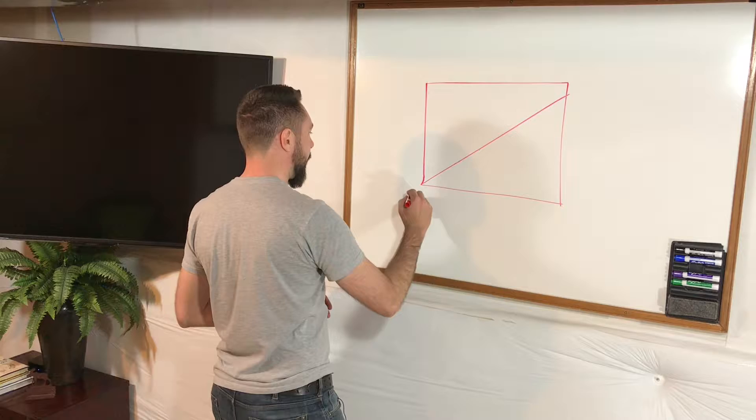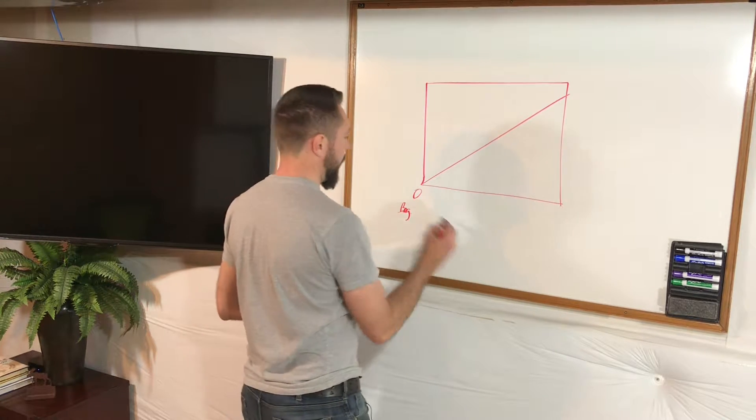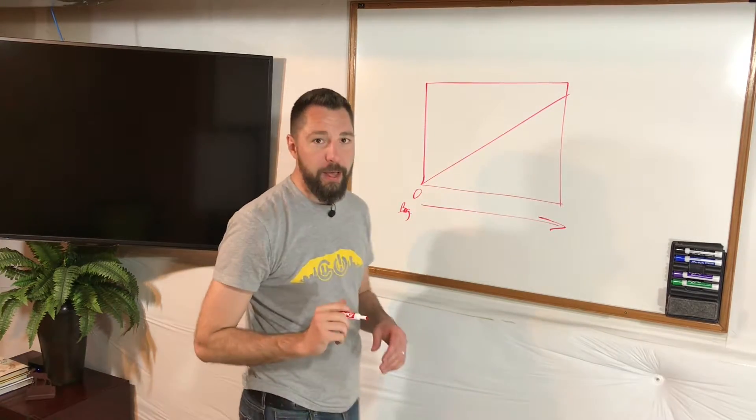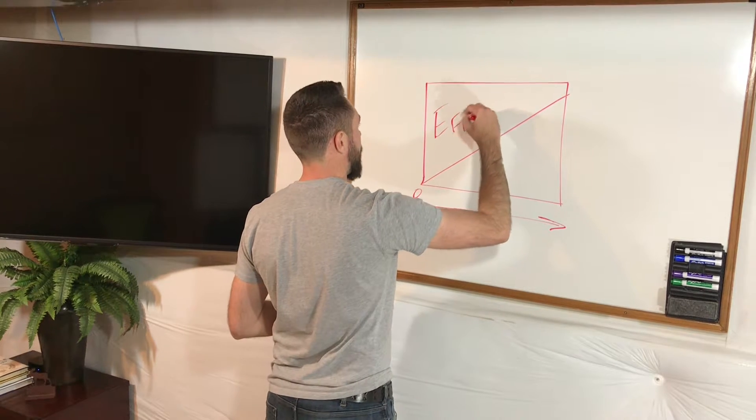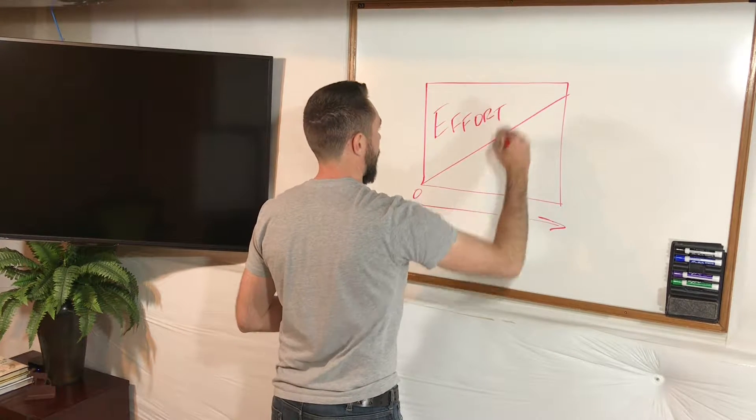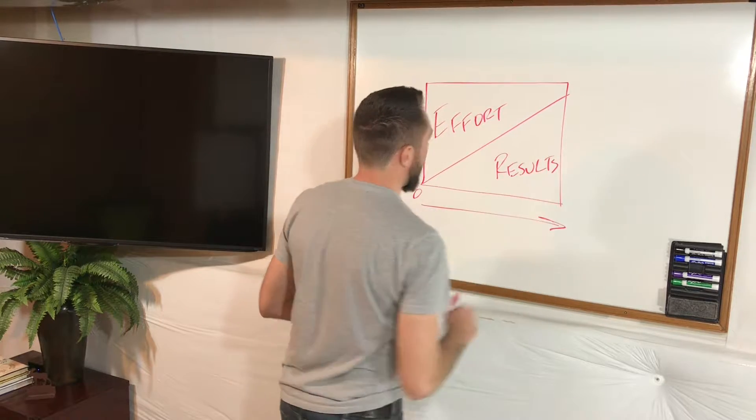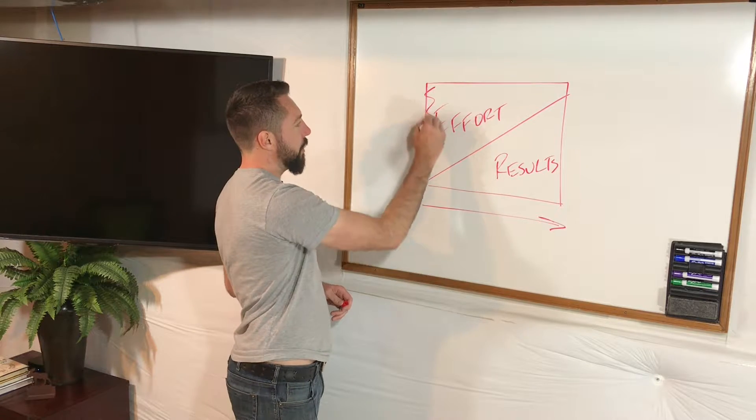So there's this graph that I like to use, looks like this. We're going to say this is the beginning here and this is time, and it kind of goes on into perpetuity. And then up here we've got the effort that you put in, and these are the results that you get back.